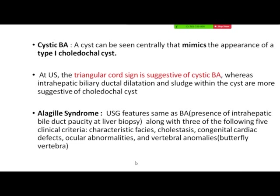Alagille syndrome involves hypogenesis of the CBD and intrahepatic biliary ducts along with other congenital anomalies — characteristic facies, cholestasis, and congenital cardiac defects. If clinically three out of five features are present along with features of biliary atresia on ultrasound, then we can suspect Alagille syndrome.